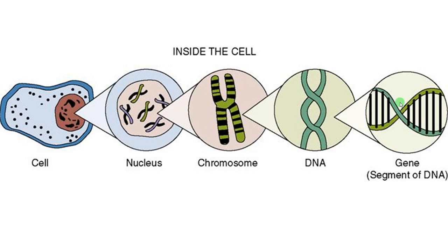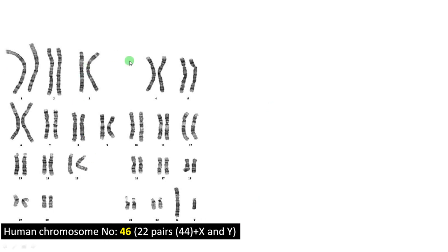Now let us look at our karyotype. Inside our nucleus there are 46 chromosomes — 22 pairs plus XY. This is a male karyotype; you can see 22 plus X and Y. The first point is a clear understanding of homologous chromosomes. As you can see, we are a diploid organism.